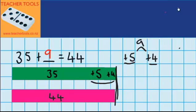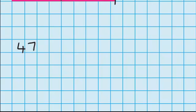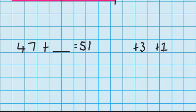Now let's try one question without materials. This time I've got 47 counters and I need to get some more counters so that I have the same as my friend who has 51 counters. I know that if I had 3 more counters that would bring me up to 50, because 47 plus 3 is 50. Now if I had 50 counters I'd only need one more, so I can write plus 1. Adding 3 and 1 more means in total I'd have to add 4 counters. So 47 plus 4 equals 51.